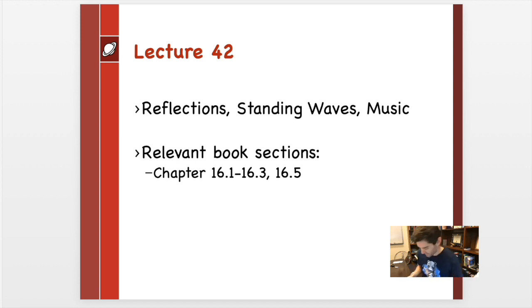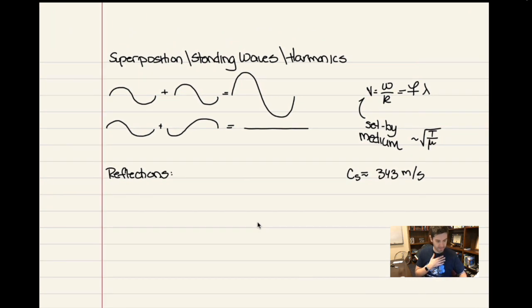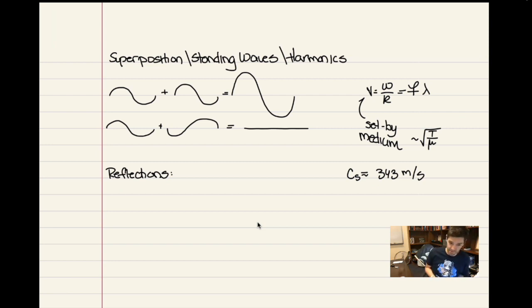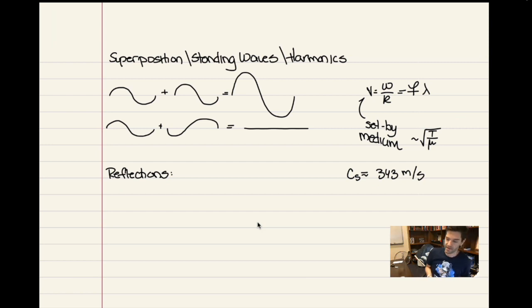Let us continue with talking about wave motion. To recap, we had started talking about superpositions of waves — that waves obey the superposition principle, meaning that two waves, when they overlap, simply add in each location and do not influence each other individually. What we perceive — what we see in the case of a slinky, what we hear in the case of sound — is a superposition of all the individual waves passing through a given point in space.